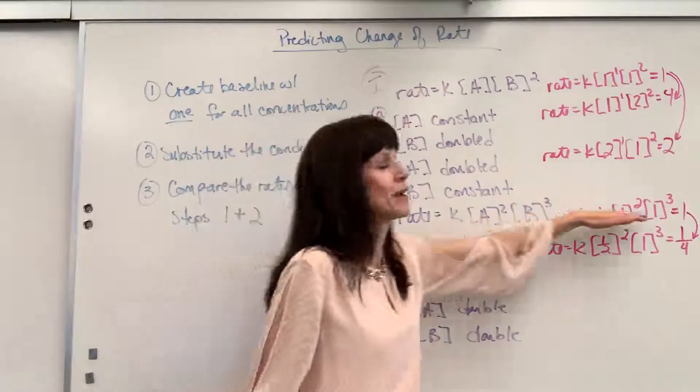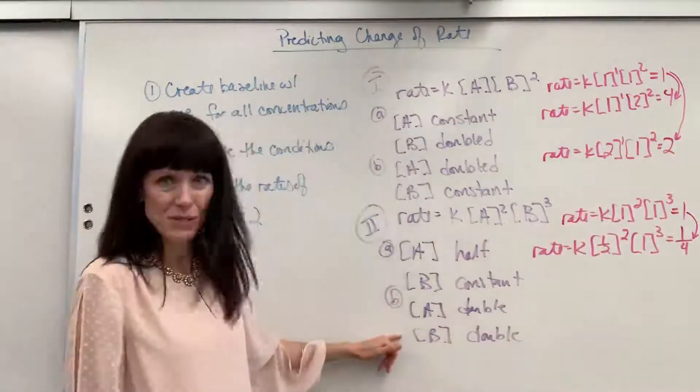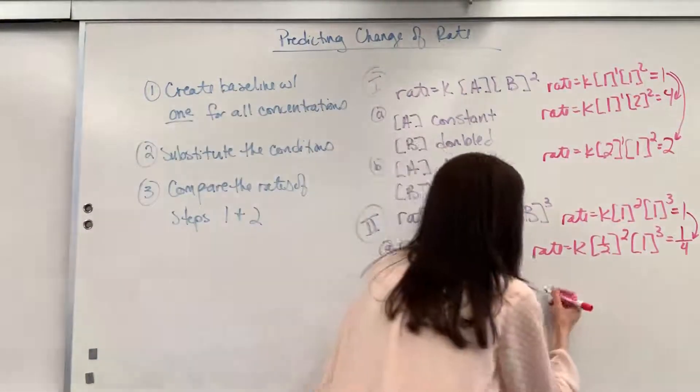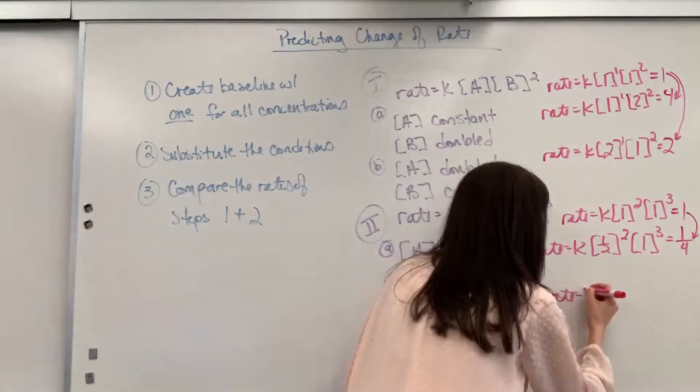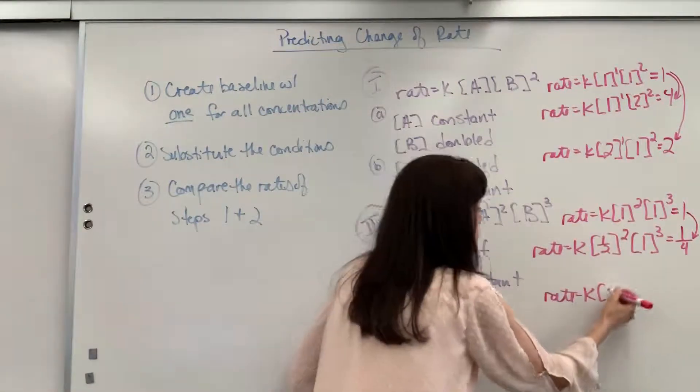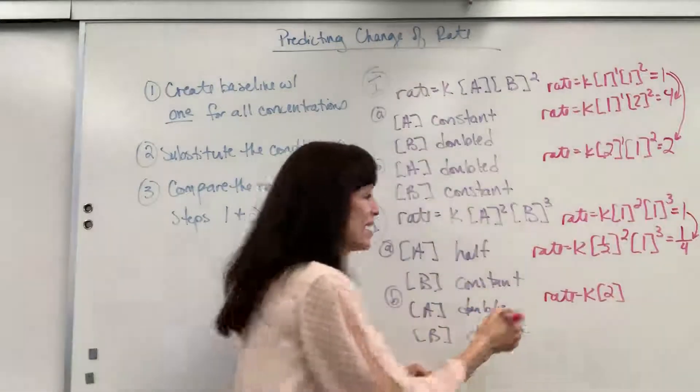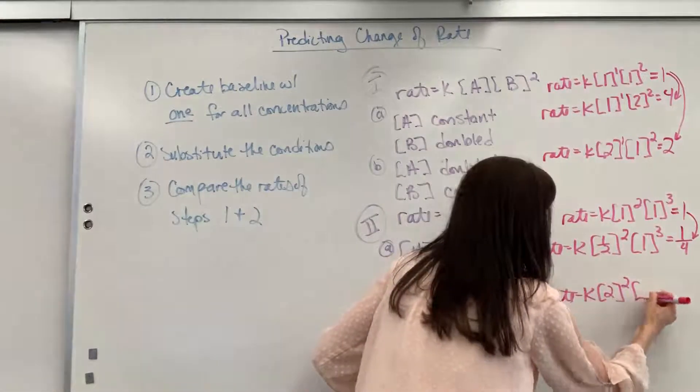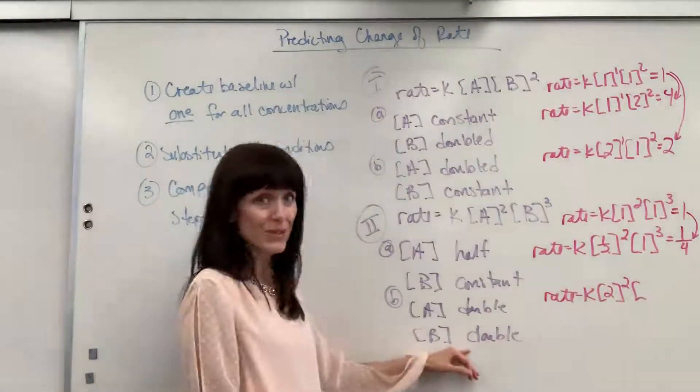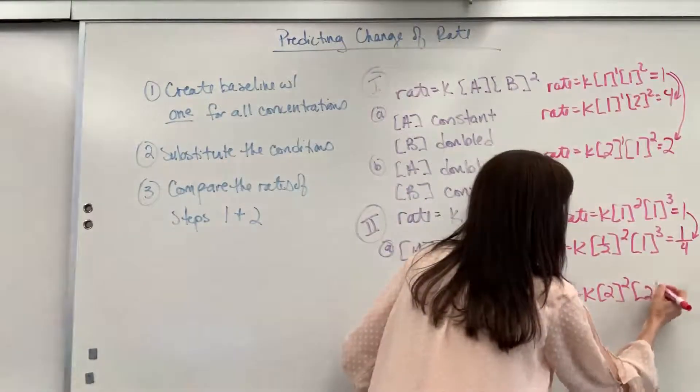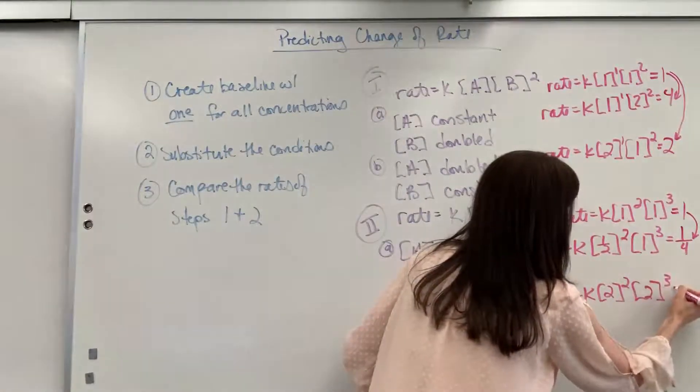Okay, so I've already created my baseline. Let's go ahead and substitute in our new situations. We're going to have rate equals K. So A is doubled, so I'll go from 1 to 2 since I double that. And that's to the second order squared. B is also doubled, so it goes from 1 to 2. Double that, and that's cubed.